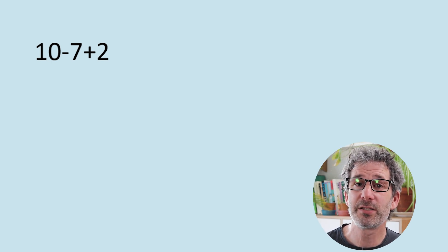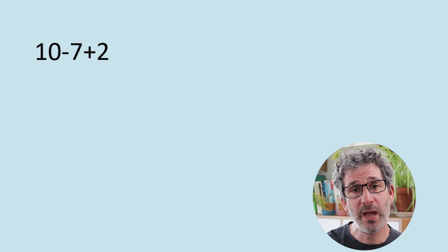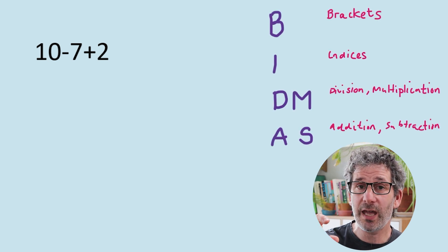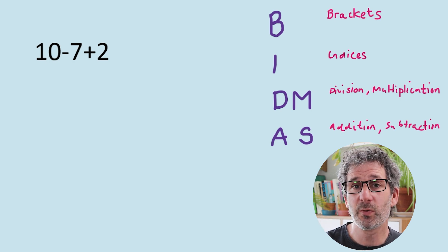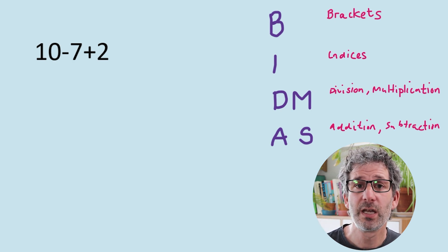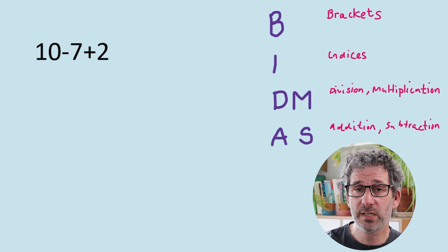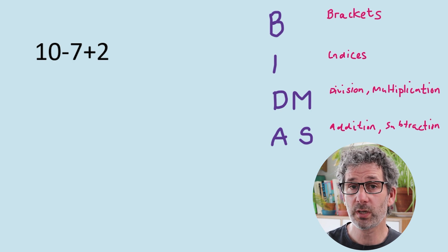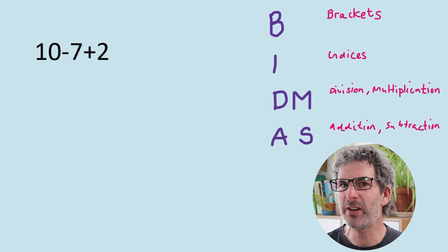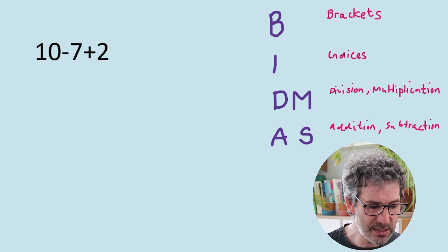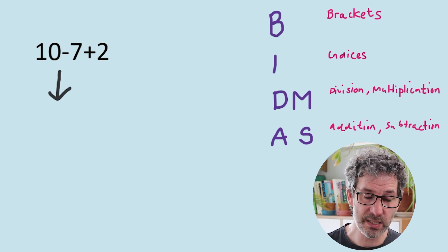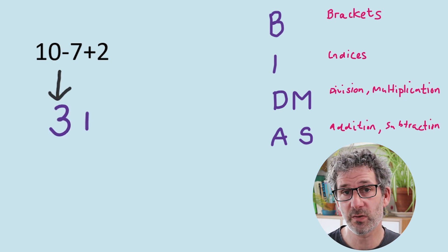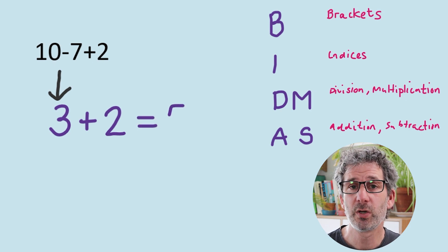Now, 10 minus 7 add 2. Although in BIDMAS the A for addition comes before the S for subtraction, those two things actually carry equal weight. So if you've got addition and subtraction, you just do them from left to right as you see them on the page. In this example, we do 10 minus 7, which is 3, and then add the 2, which is 5.